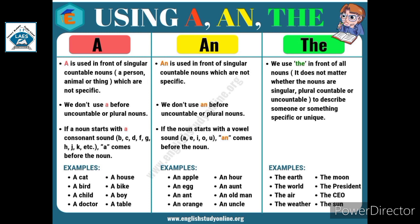Now we'll understand when to use AN. AN is used in front of singular countable nouns which are not specific. AN कब use किया जाता है — जब singular हो और countable noun भी हो. We don't use AN before uncountable or plural nouns. If the noun starts with a vowel sound — A, E, I, O, U — AN comes before the noun. अगर A-E-I-O-U के sound वाले words मिलें तो उनके आगे AN लगाओगे, जैसे an apple.